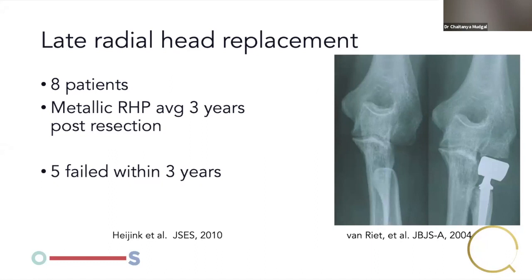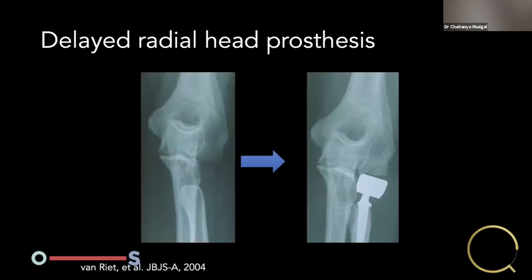The only published series on late radial head prosthesis placement — by Andras Hayink in 2010 from the Mayo Clinic — included 8 patients with metallic radial head prosthesis averaging 3 years post-resection, and 5 of 8 failed within three years. One patient had the prosthesis eating away the capitellum, leading to pain and stiffness. The postulated main reason was disuse osteoporosis — when the capitellum is not loaded it becomes soft, and when a radial head prosthesis is later inserted, it eats into the capitellum.